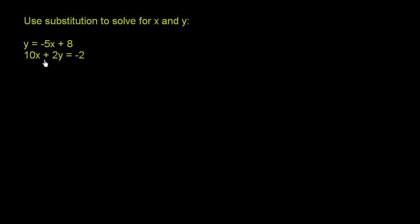So they've set it up for us pretty well. They already have y explicitly solved for up here. So they tell us this first constraint tells us that y must be equal to negative 5x plus 8. So when we go to the second constraint here, every time we see a y, we say, well, the first constraint tells us that y must be equal to negative 5x plus 8.